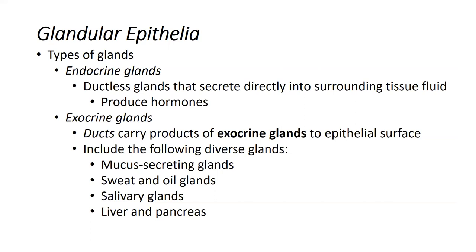Examples of exocrine glands include your mucus-secreting gland, which is the goblet cell — a unicellular exocrine gland. Other examples are your sweat glands and oil glands, sometimes called your sebaceous glands and sudiferous glands. There are also salivary glands, and the liver and parts of the pancreas are exocrine glands. Notably, the pancreas has both exocrine and endocrine parts.